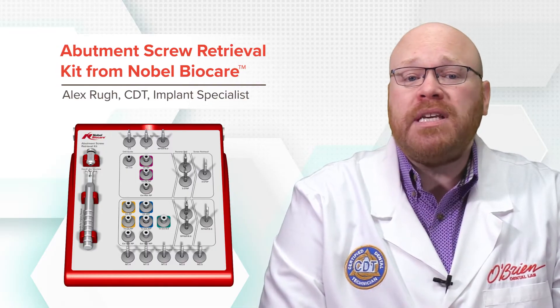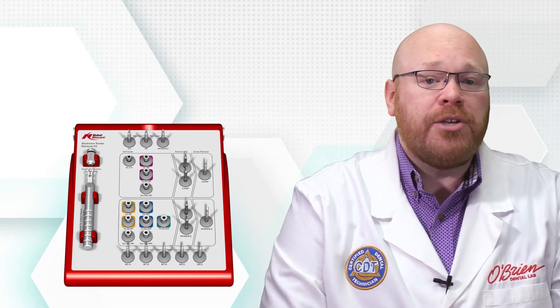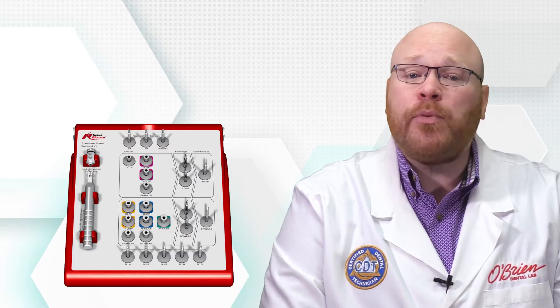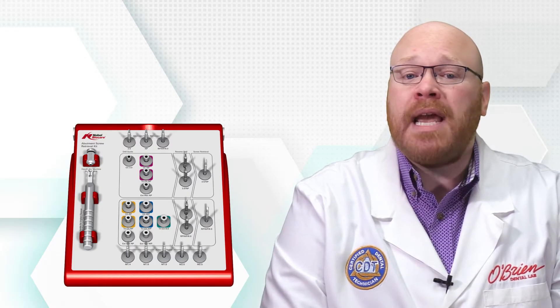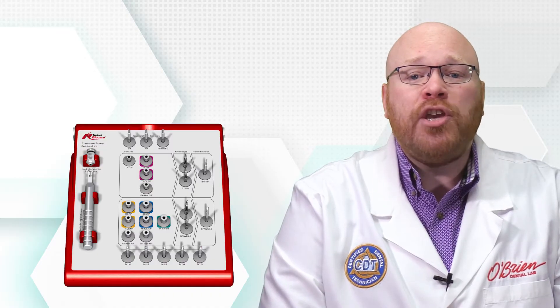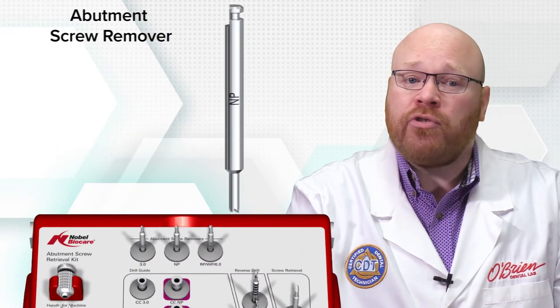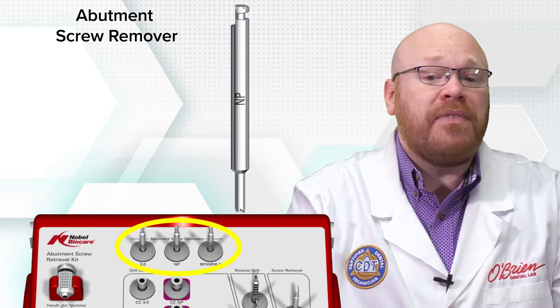There are two different procedures to follow depending on the situation. The first is the simple procedure, and this is for a case where the screw fragment that remains is still rotatable. For this method, you'll just need the appropriate abutment screw remover, which can be found at the top of the kit.